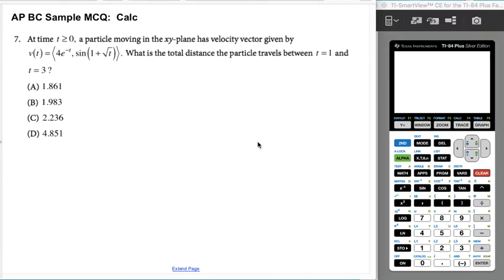All right, so now we have a calculator problem that actually does require a calculator. We're given the velocity of a particle in the xy plane, and we're asked for the total distance the particle travels from t=1 to t=3.